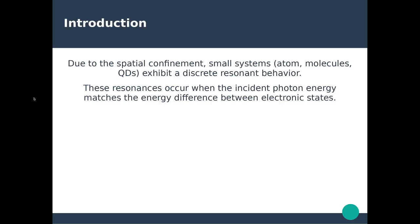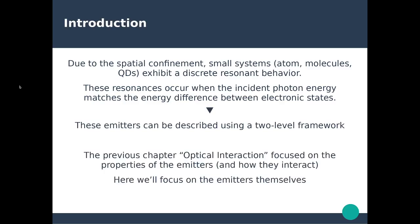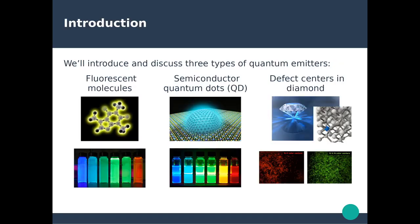The first thing to notice is that due to special confinement, very small systems such as molecules and quantum dots exhibit a very discrete resonant behavior where resonances occur only when there's an incident photon which matches the energy difference between consecutive electronic states. Emitters can typically be described using two-level systems. We have three families of quantum emitters: fluorescent molecules, semiconducting quantum dots, and defect centers in diamond.